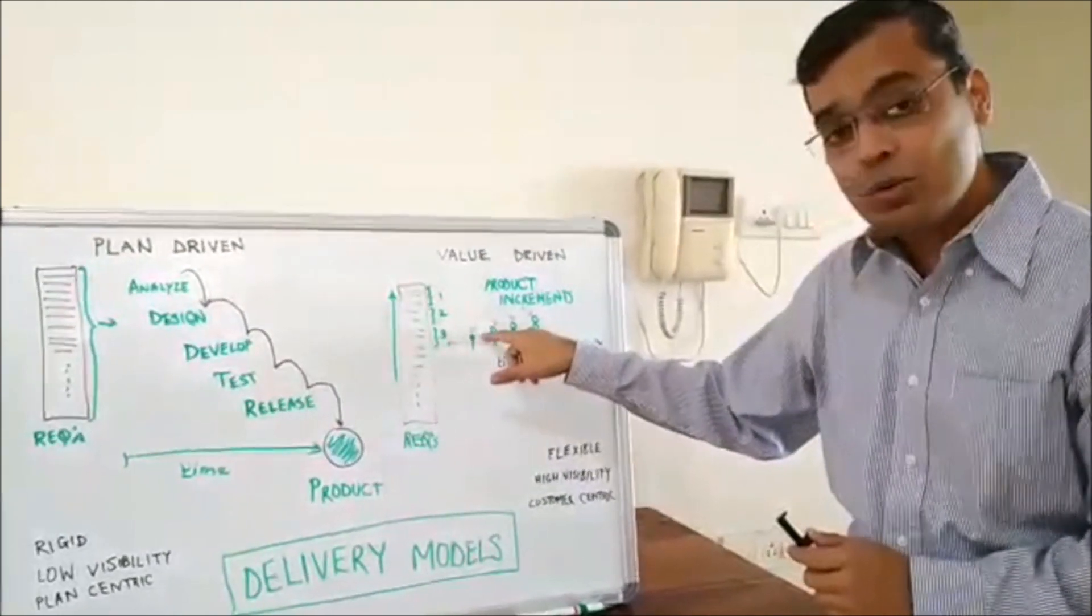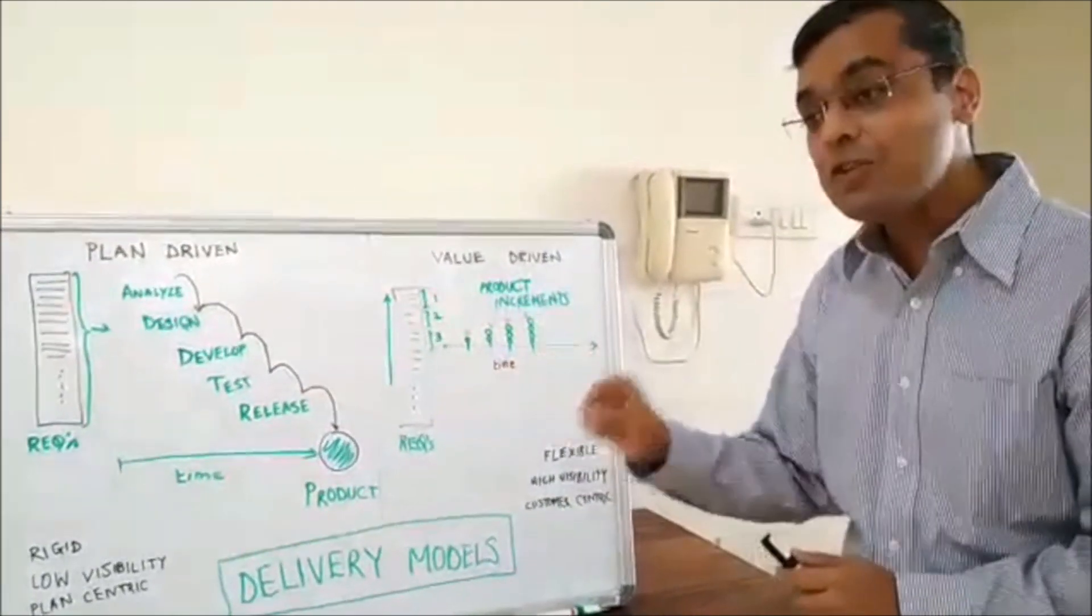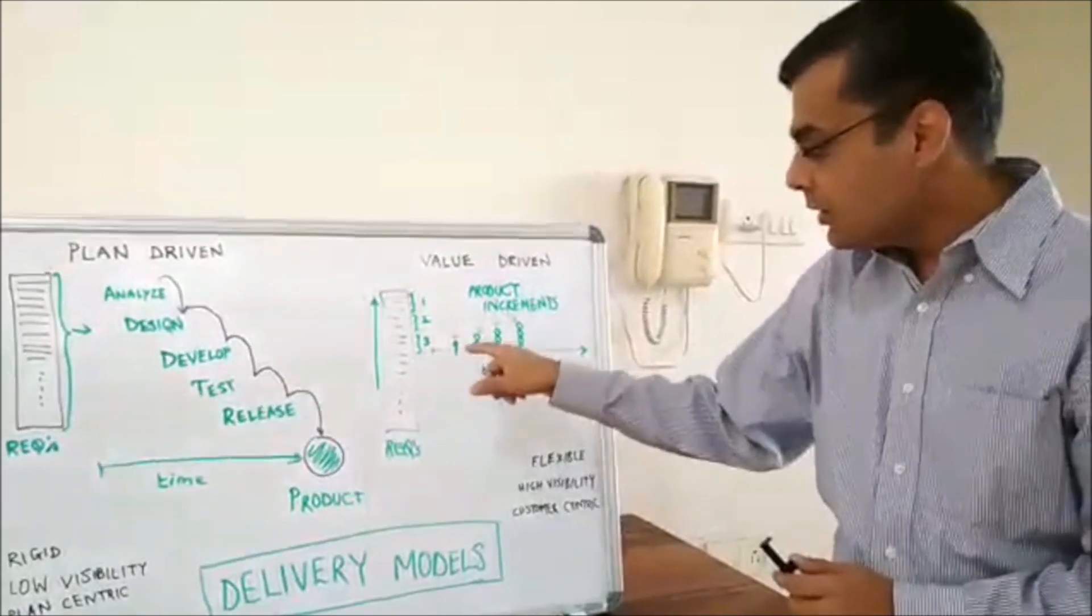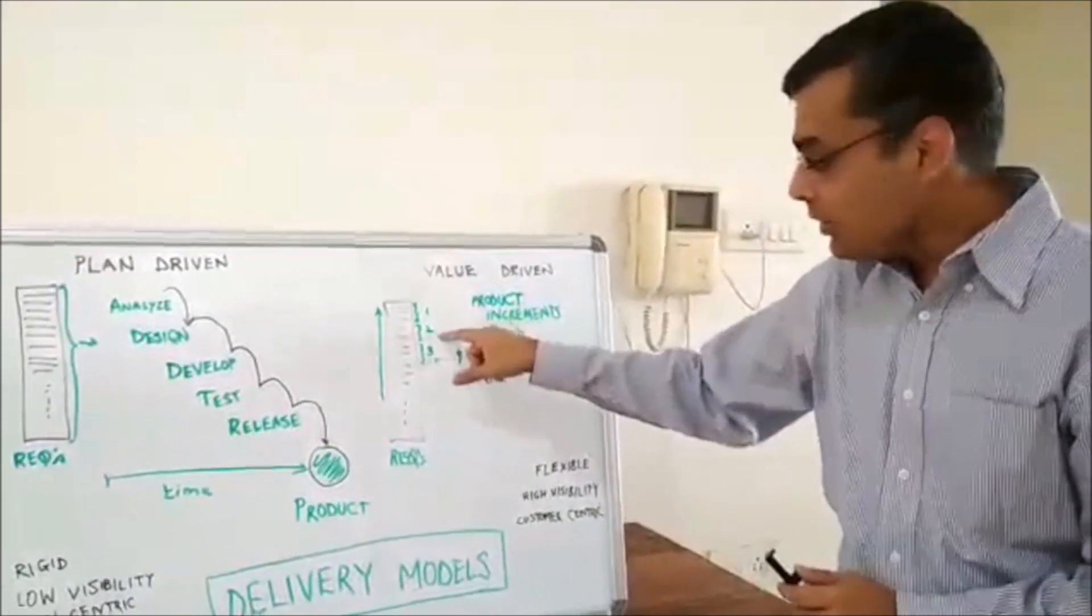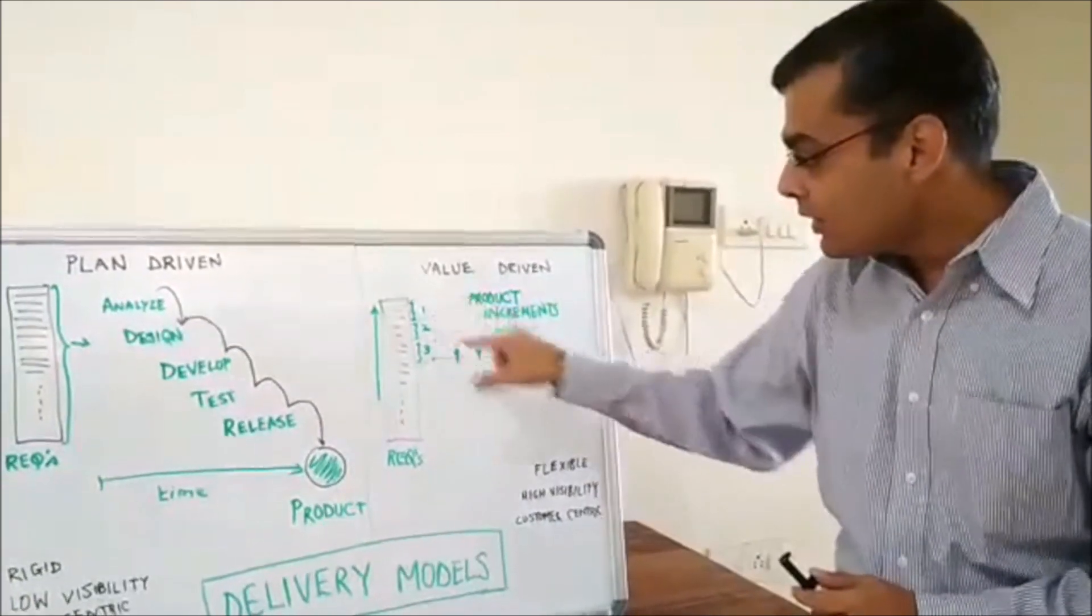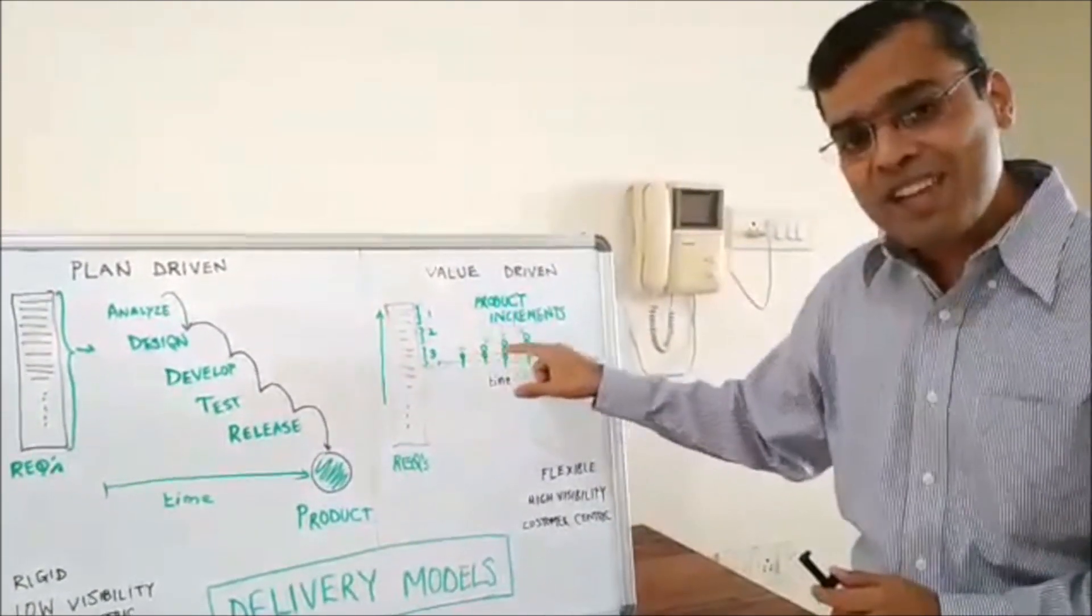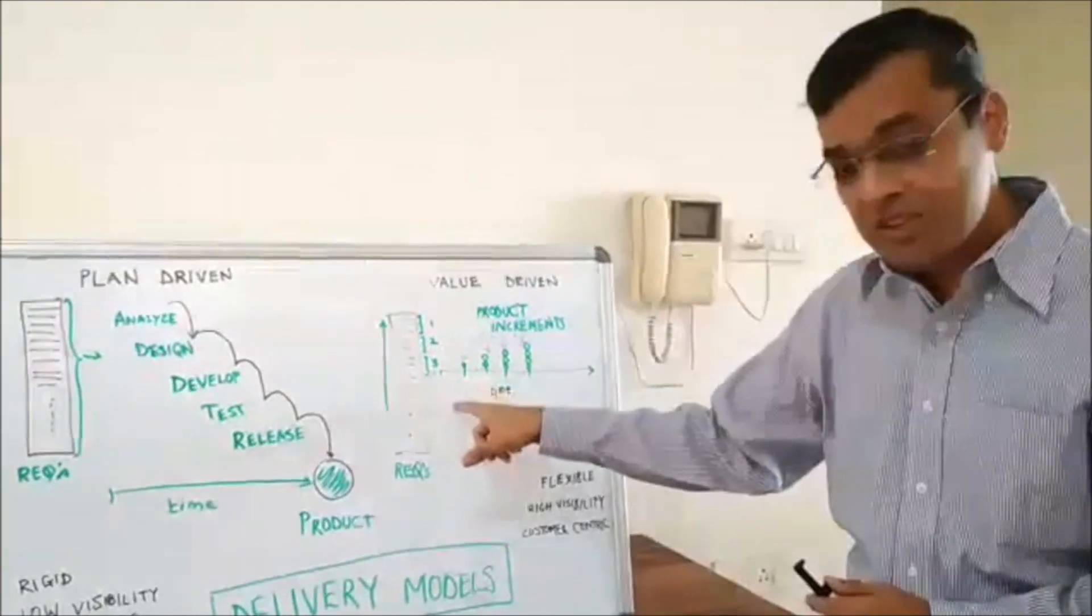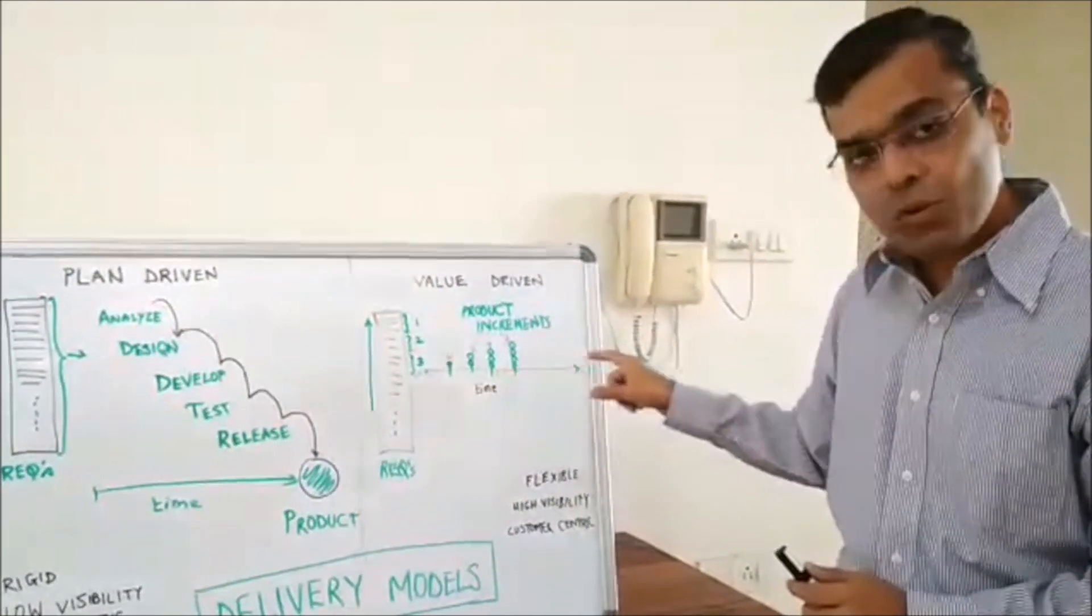You don't have to give it to the customers but at least it should be releasable. Then the next set of requirements will go into the second iteration and during that time they'll work on those requirements and build on top of the existing increment they had built in the previous iteration and so on and so forth.